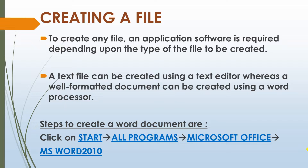Creating a file. To create any file, an application software is required depending upon the type of the file to be created. For example, a text file can be created using a text editor, whereas a well-formatted document can be created using a word processor. Steps to create a Word document are: click on Start, then All Programs, then Microsoft Office, and then MS Word 2010, or whichever version you are using.